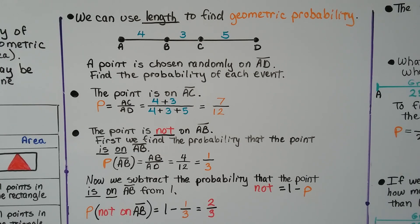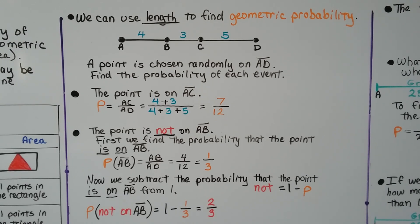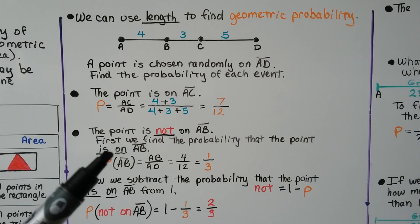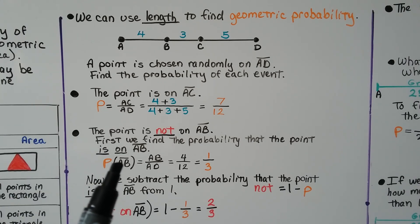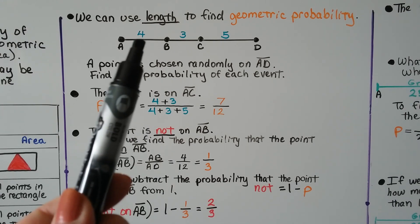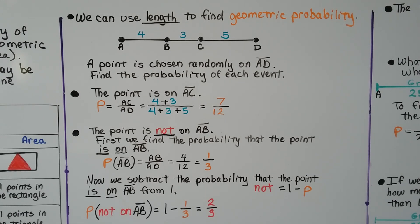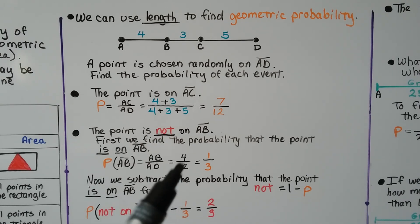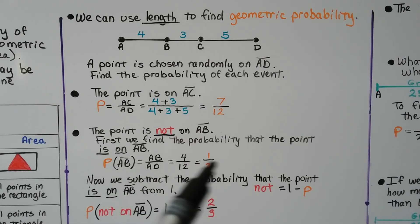Next, find the probability the point is NOT on segment AB. First we find the probability that it IS on AB: that's AB over AD, which is 4 over 12, or 1 third. Then the probability of it not being on segment AB is 1 minus 1 third, which equals 2 thirds.